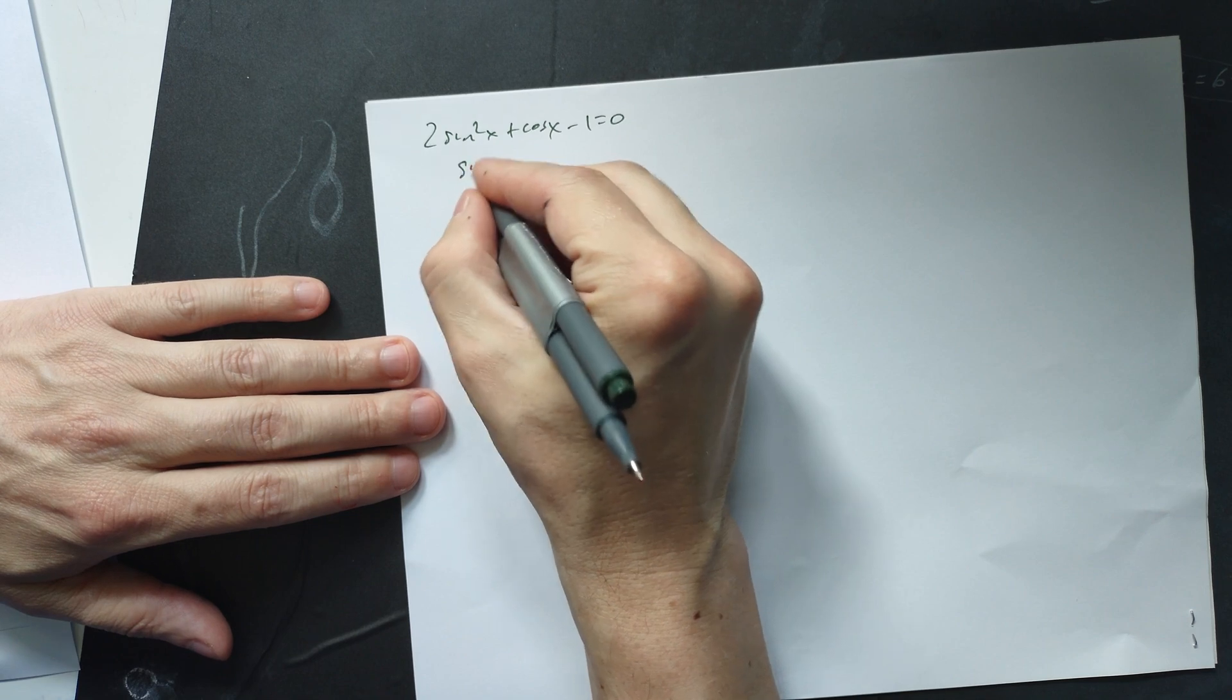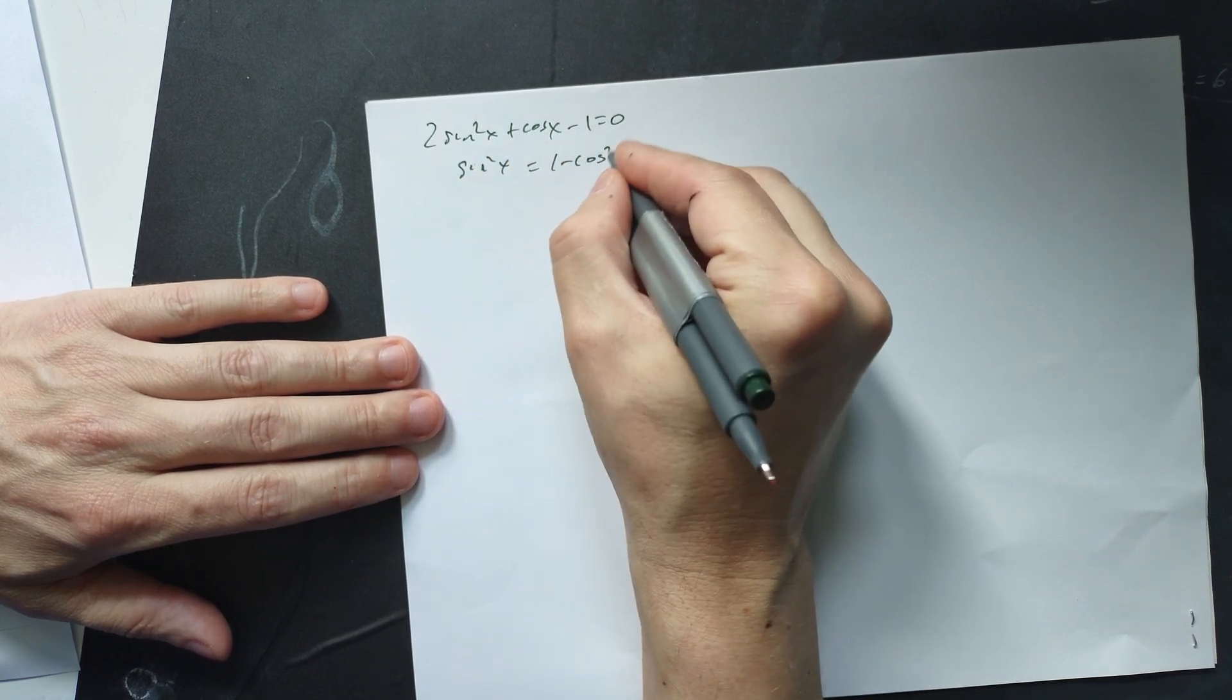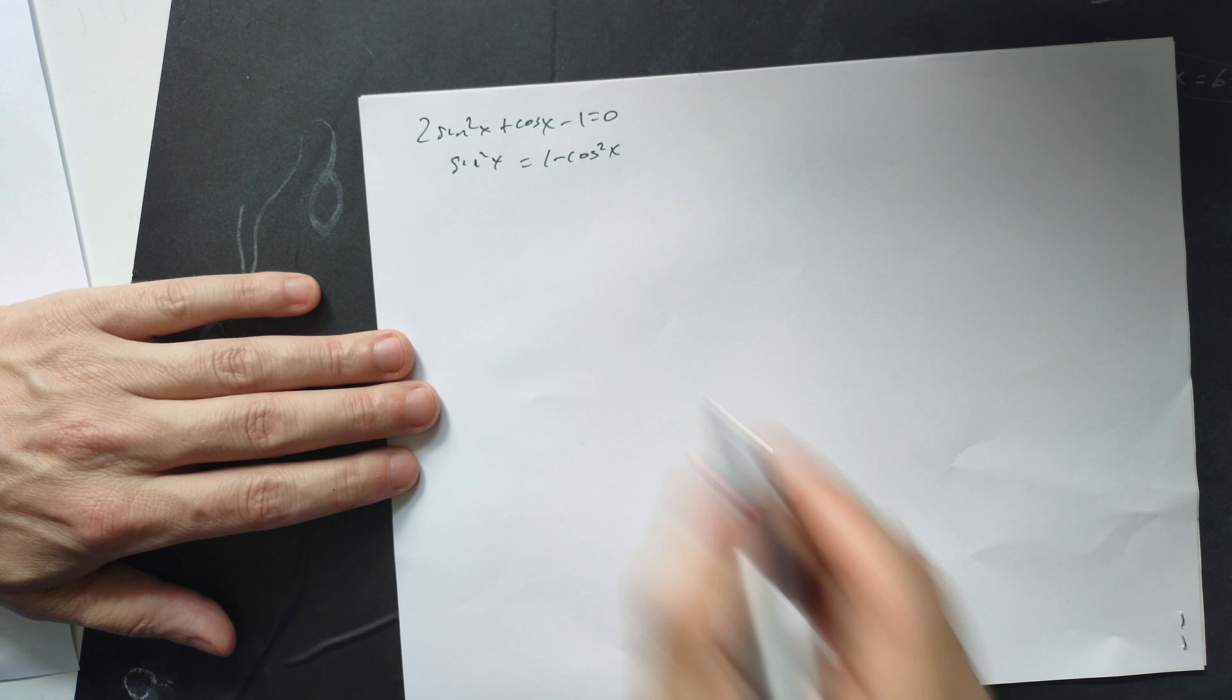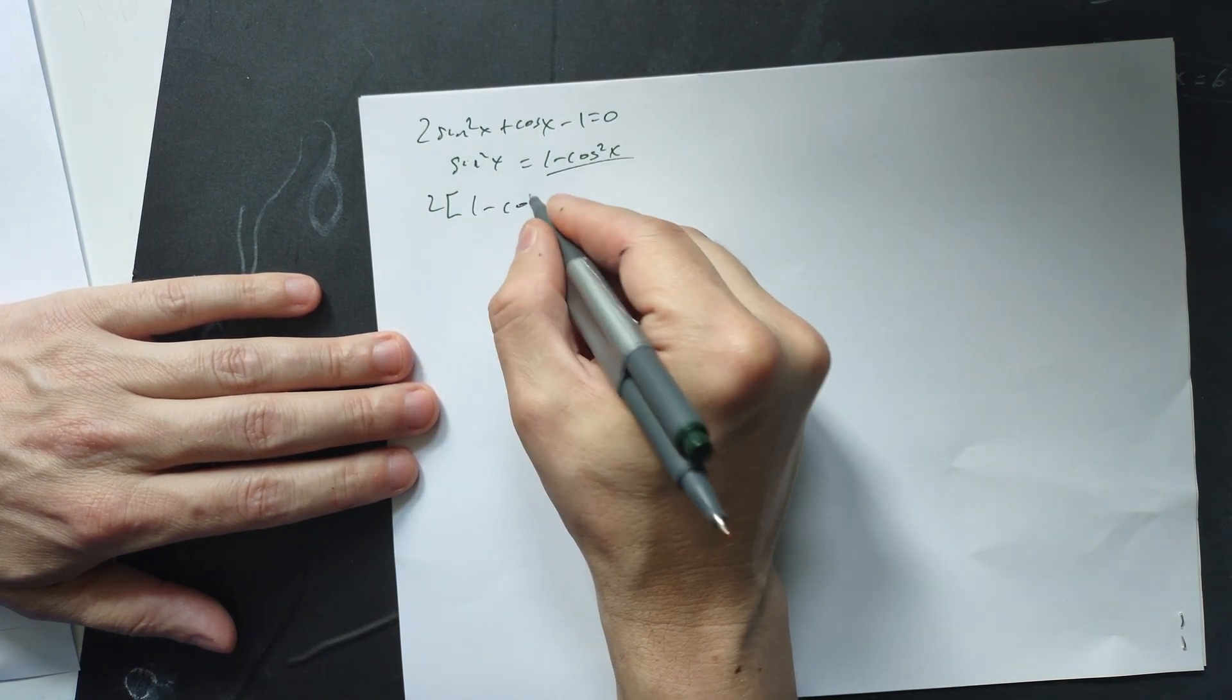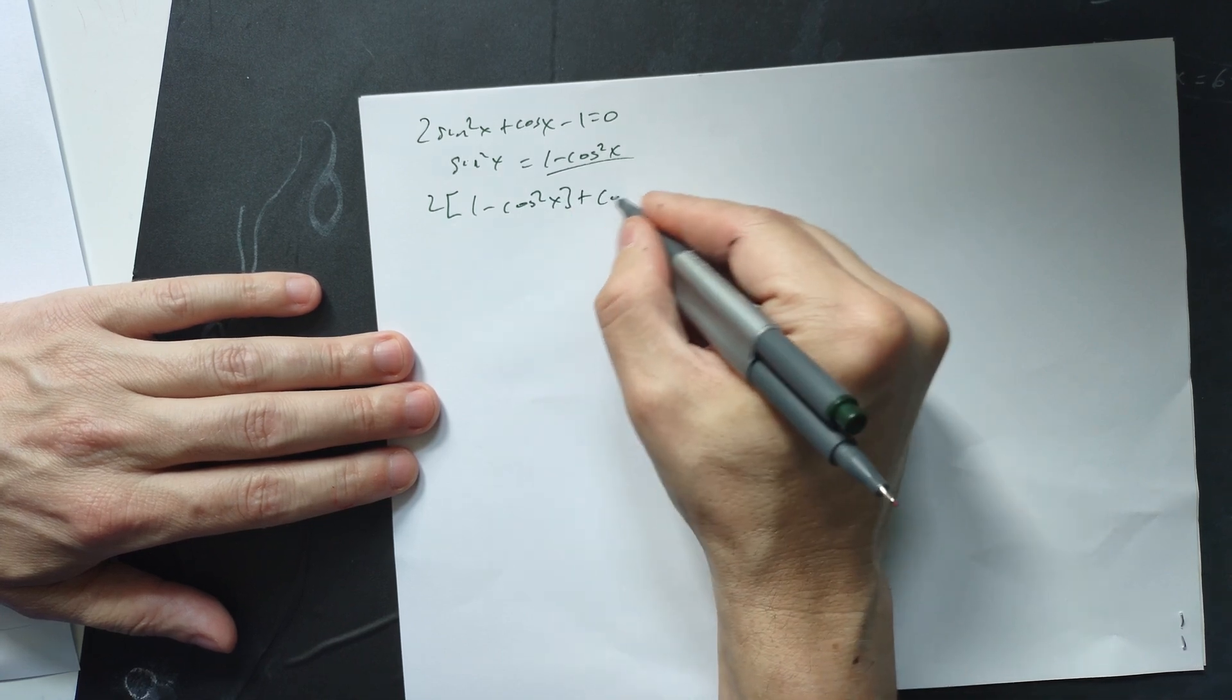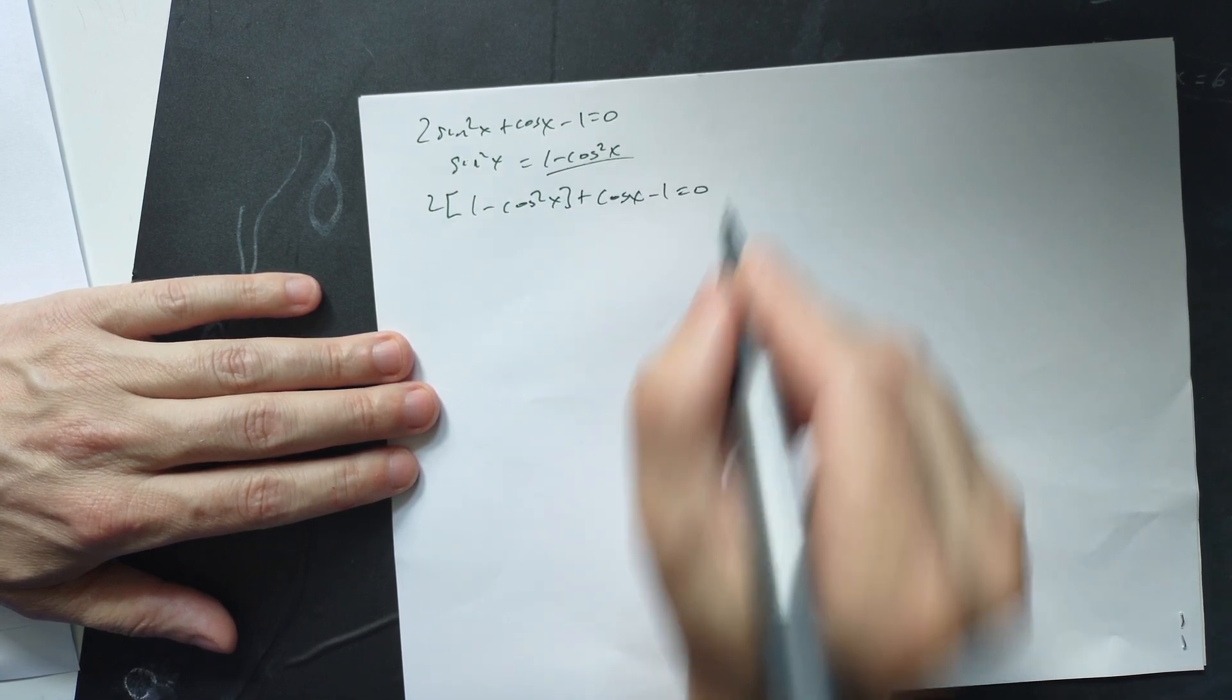So first we write, remember, sine squared x is equivalent to 1 minus cosine squared x from the Pythagorean identity. So that means you're going to have 2 and then replace sine squared x with this part. 1 minus cosine squared x plus cosine x minus 1 is equal to 0 as shown.